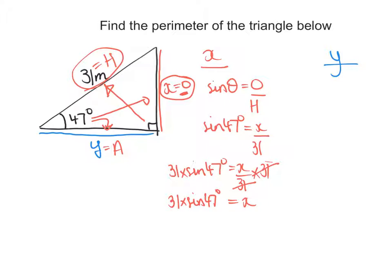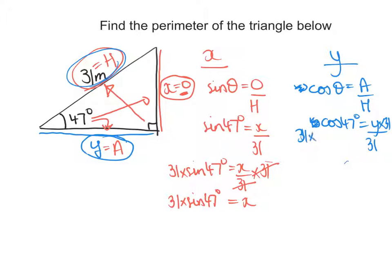Now y. How do I work out y? Well y is the adjacent side and the hypotenuse I still know. So the adjacent and the hypotenuse. That would have to be cosine of theta would be the adjacent over the hypotenuse. So that would be cosine of 47 is equal to y, the adjacent side, divided by 31. And again I'll times by 31 on both sides. Now the 31 will cancel out there. And that will leave me with y equals 31 times by cosine of 47.